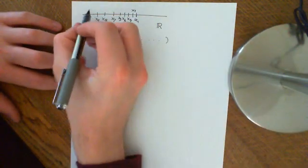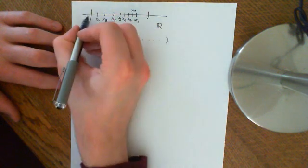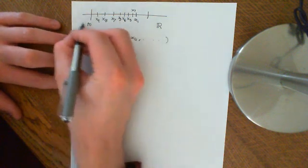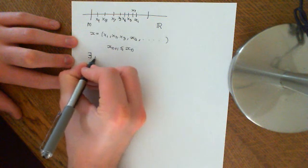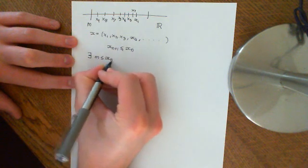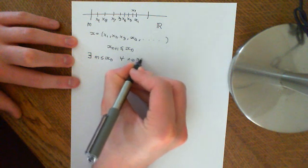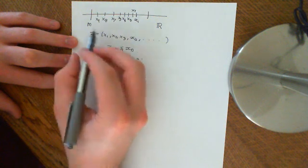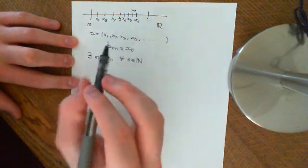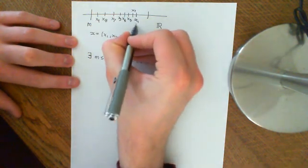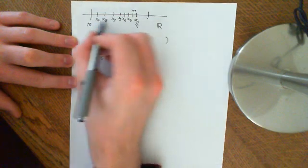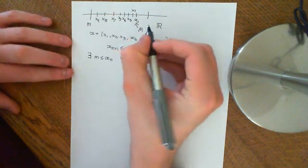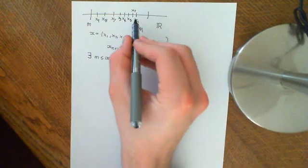However, if the sequence is bounded — so if there is some little m, some lower bound for the sequence — if there exists a little m which is less than or equal to all the terms of the sequence, so whatever term x_n you pick, x_n is greater than or equal to m. If that occurs, obviously there's going to be an upper bound, because x1 is the upper bound, since it's greater than or equal to all the other terms because the sequence is monotonically decreasing. So we can use x1 as our big M.